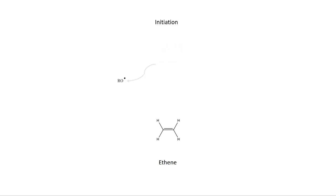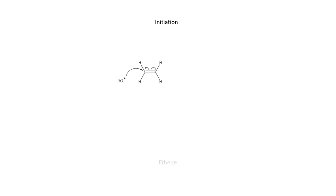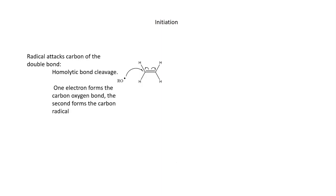The initiator radical reacts with the monomers by attacking a carbon atom in the alkene bond. As with the initiator, the bond breaks via homolytic cleavage, meaning that one electron forms a covalent bond to the initiator on the first carbon, and the second electron remains unpaired on the second carbon of the double bond.